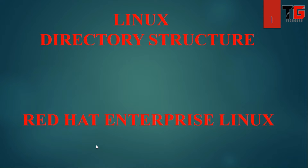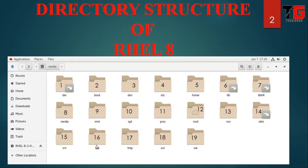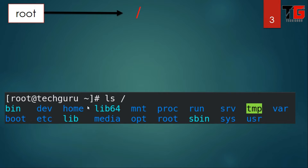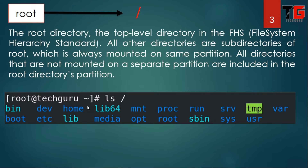In this video we will learn about the Linux directory structure. In my last video we studied about basics of shell. This is the directory structure of Red Hat Linux. There are 19 directories. On top there is a slash, which means root. The root directory is the top level directory in the file system hierarchy standard. All other directories are subdirectories of the root.